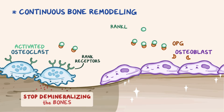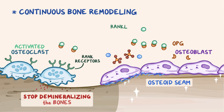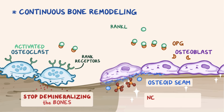Once that happens, the osteoblasts start secreting a substance called osteoid seam, which is mainly made up of collagen, and acts like a scaffold upon which calcium and phosphate can get deposited. And that's how new bone begins to get formed again.